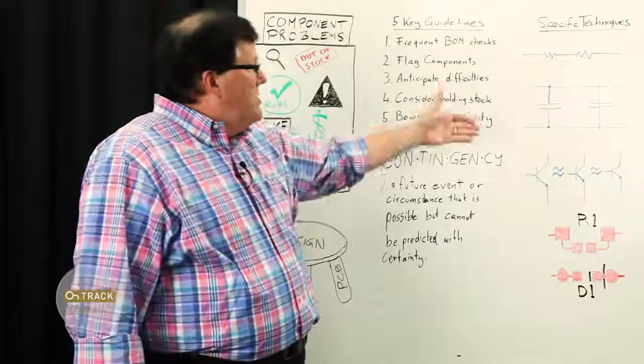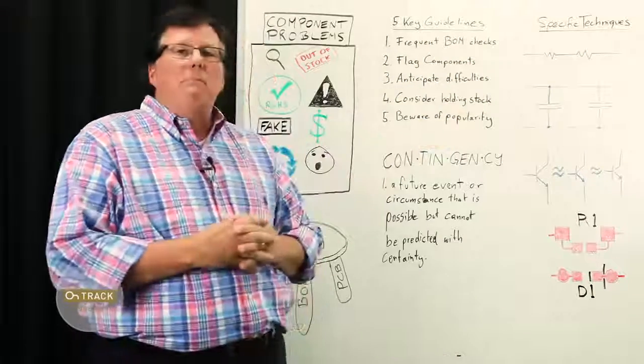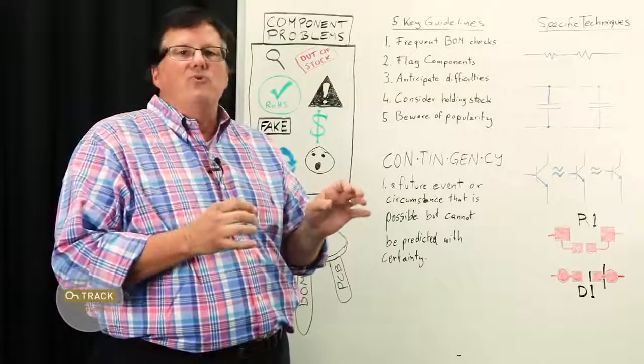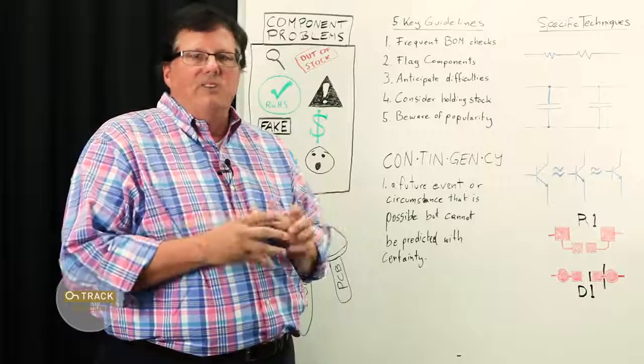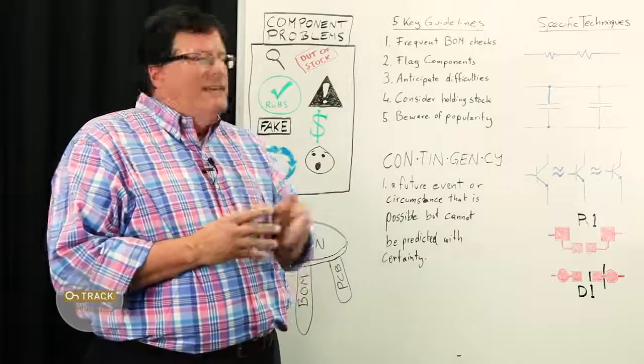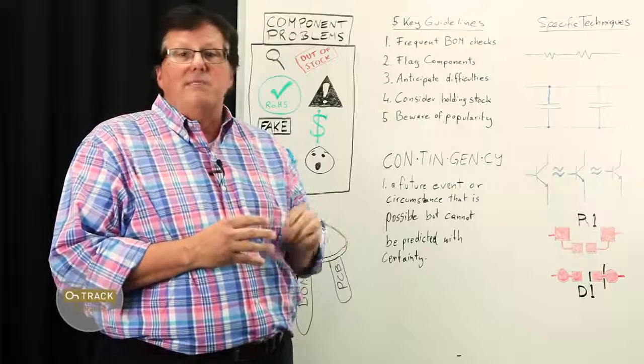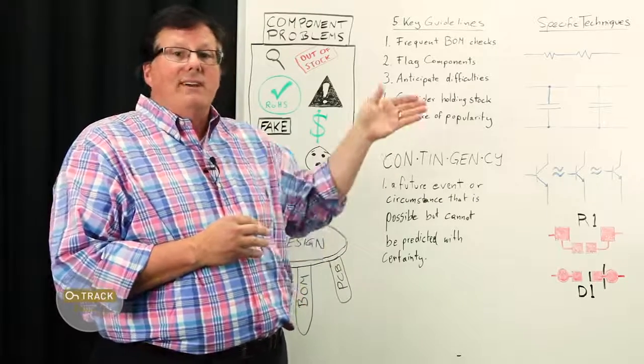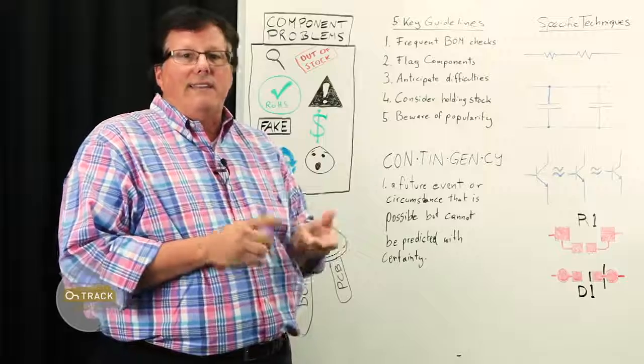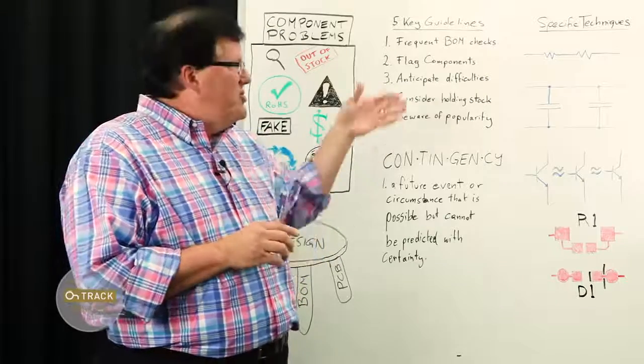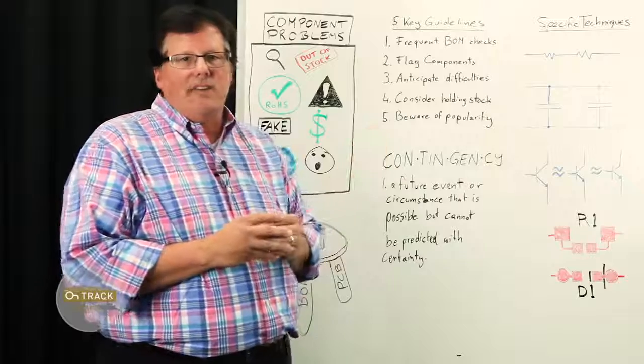So now I'm going to move into some specific techniques that designers can use for some relatively straightforward situations. The first two are the idea of combining discretes to minimize the number of unique line items you have in your bill of materials. Sometimes this would end up increasing the number of placements on your board, but it may be worth the trade-off in having a smaller number of unique line items, which generally leads to lower assembly costs.